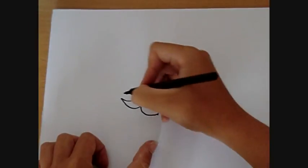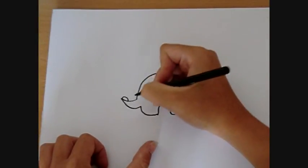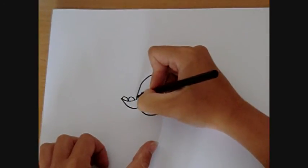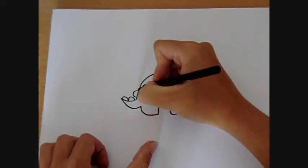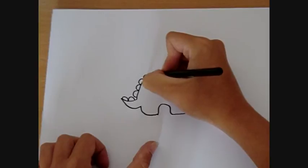So basically what you want to do is just draw some of these little plates going along his tail. And continue them all the way up his back. Like that.